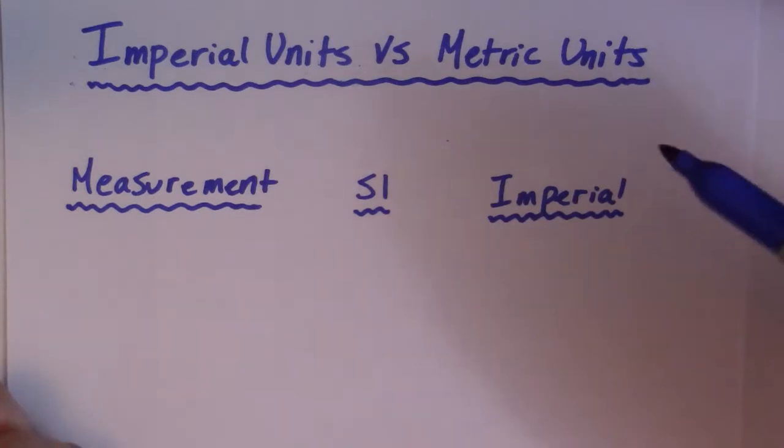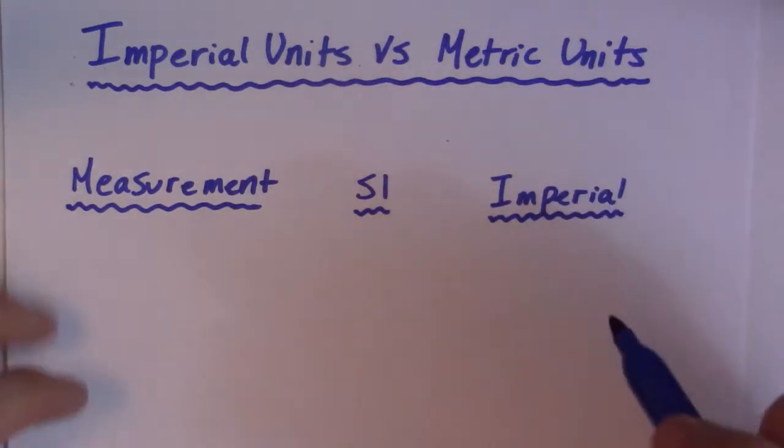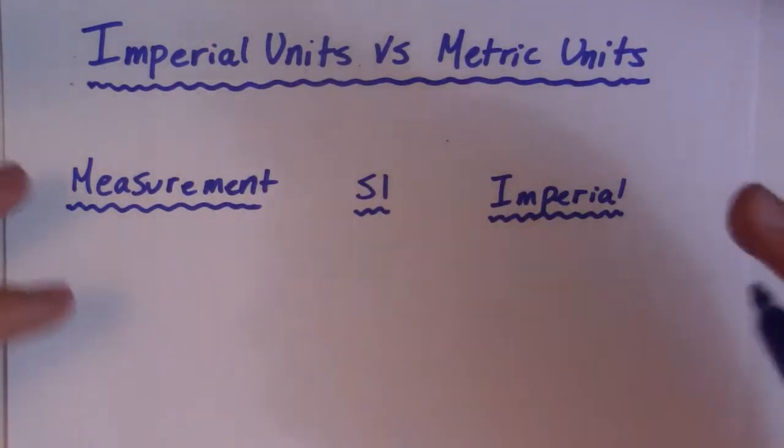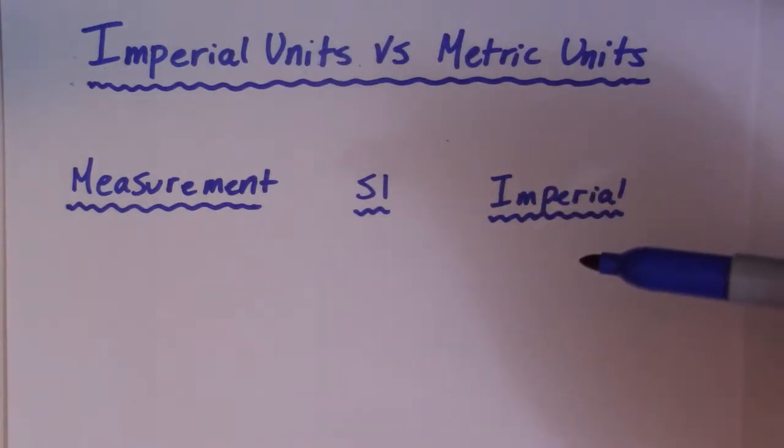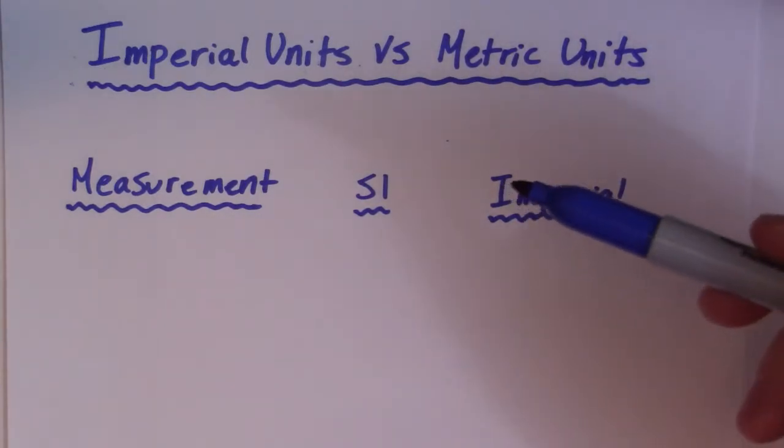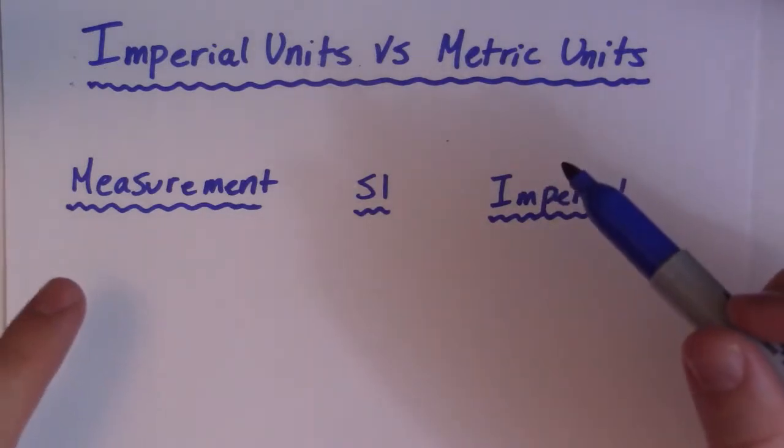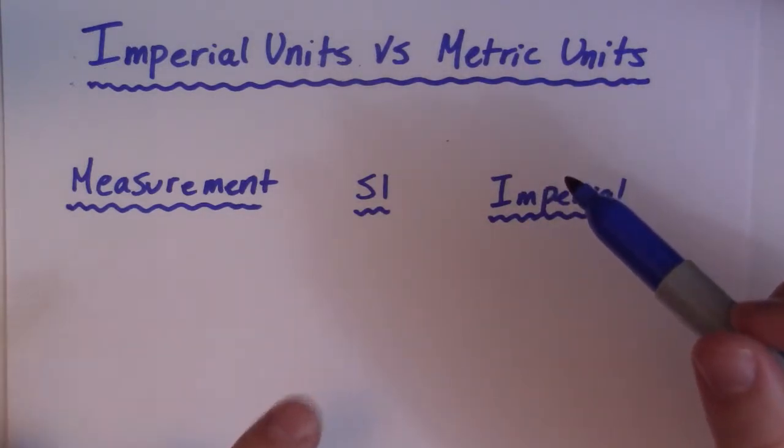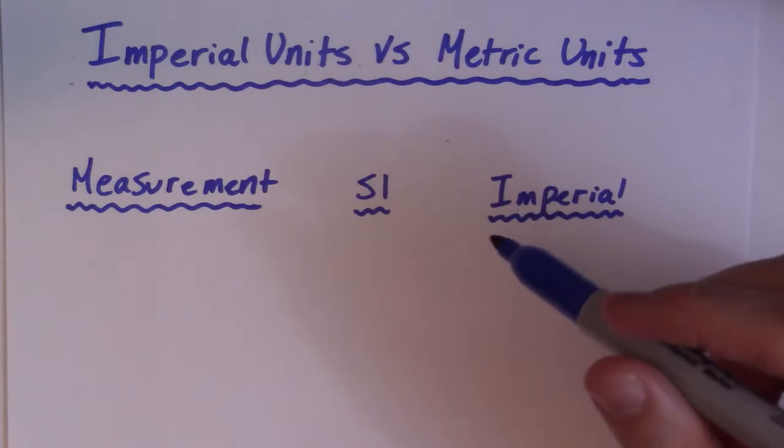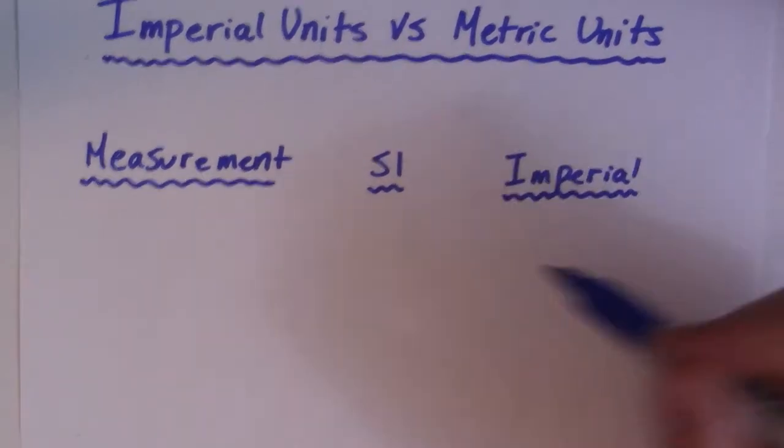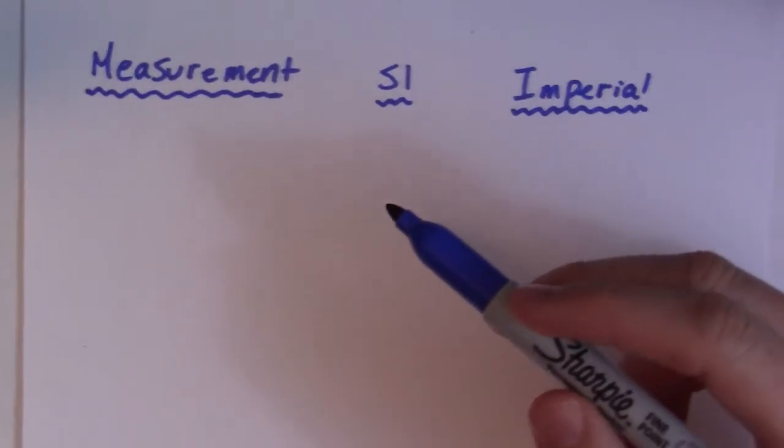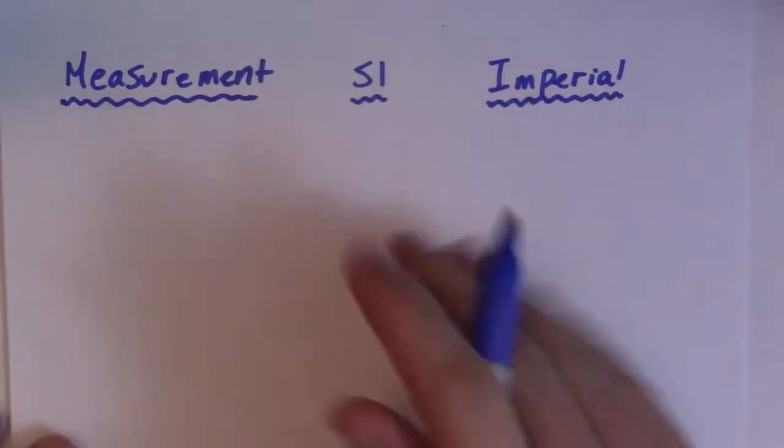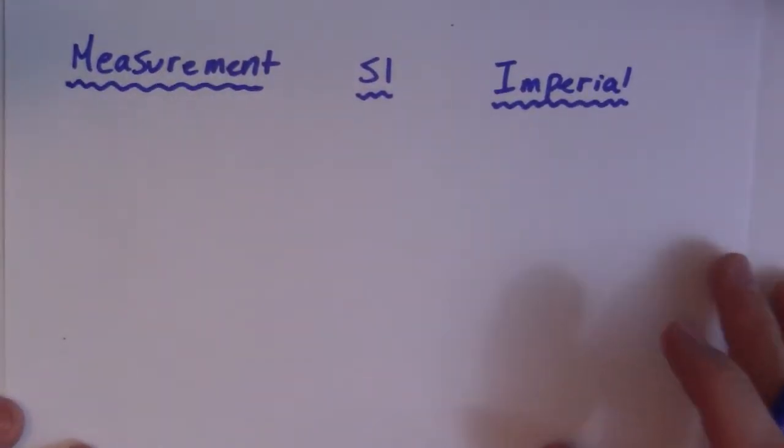But on their driver's license, it would say the equivalent in kilograms. So we're constantly talking about these units of measurement. In this video, I'm going to take you through a couple of different things you need to look for in terms of the unit and what group it belongs to. Let's start with one of the most common ones, which would be distance.